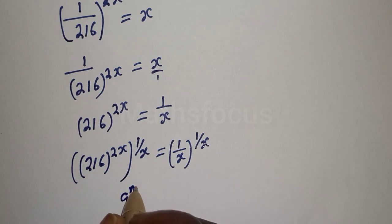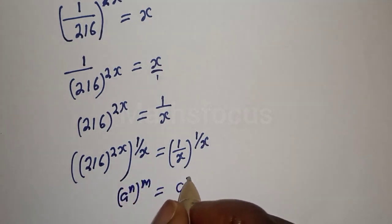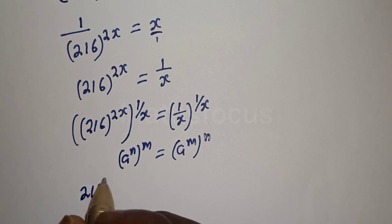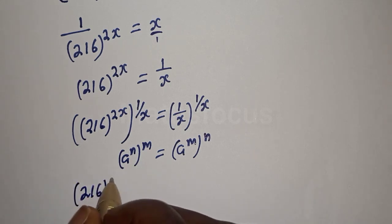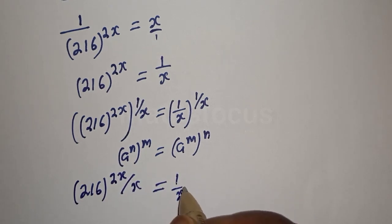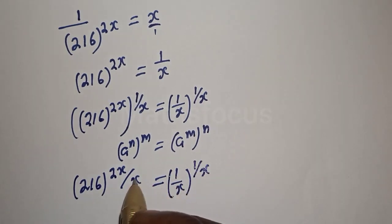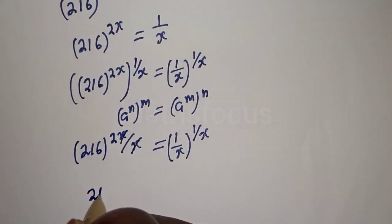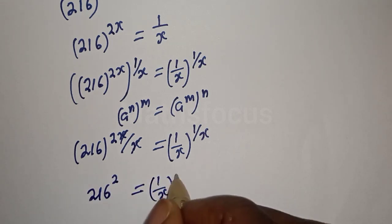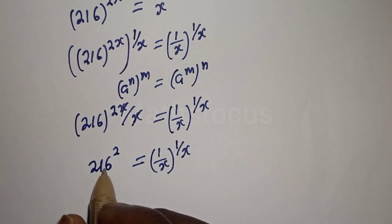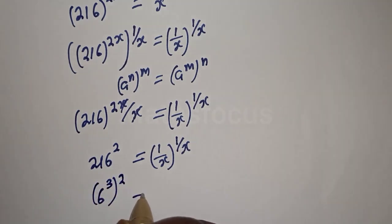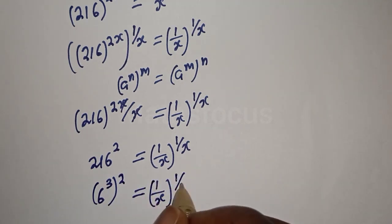If you have a raised to power n, to the power of m, this is equal to a raised to power m to the power of n. So this gives us 216 raised to the power 2x over x is equal to 1 over x to the power of 1 over x. This simplifies: 2x over x cancels to give 216 squared, and 216 is the same thing as 6 raised to the power 3, so 6³ squared is equal to 1 over x to the power 1 over x.